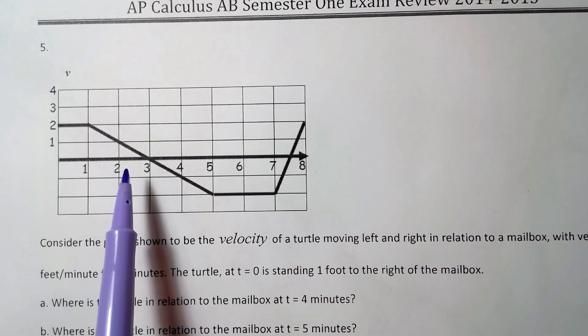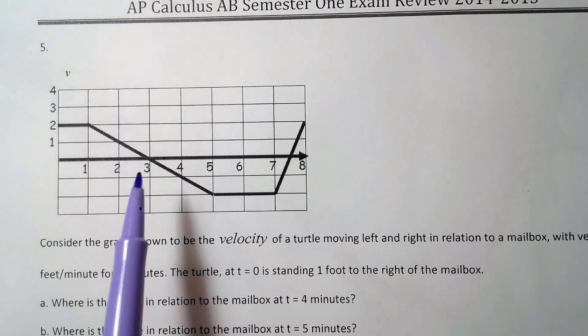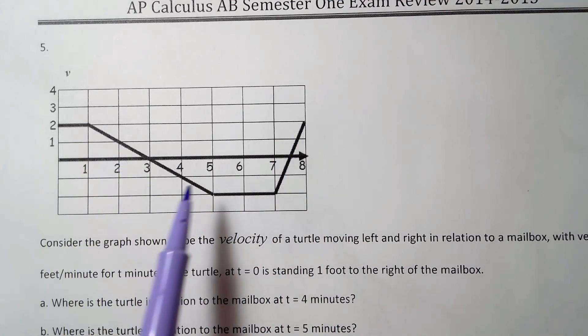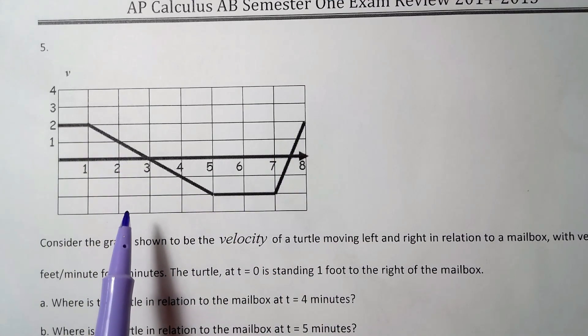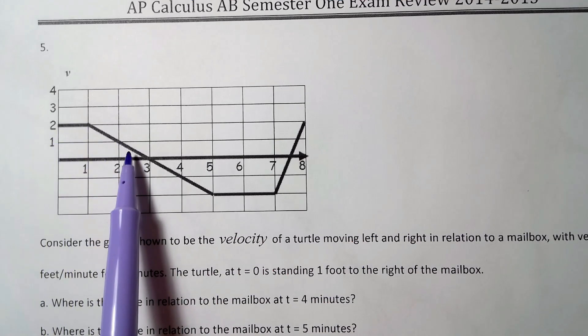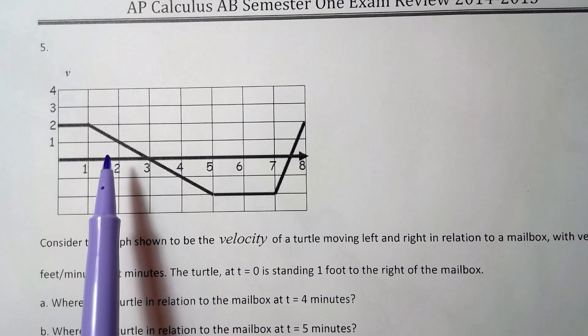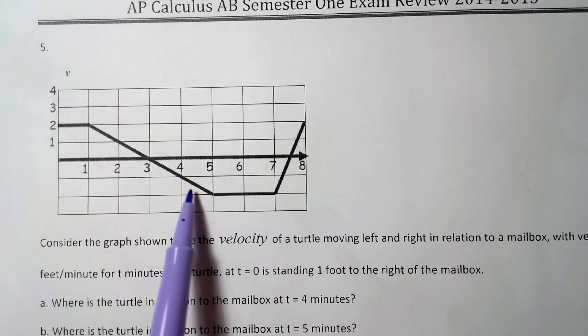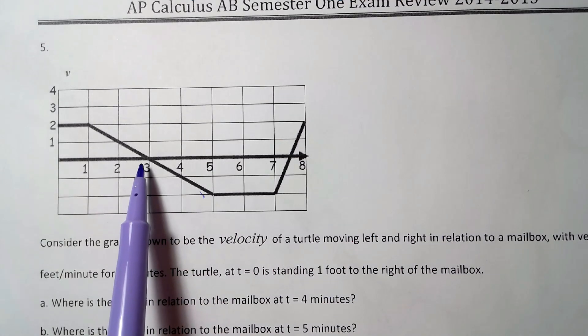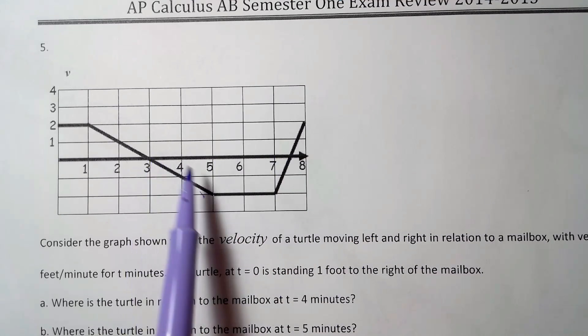So anyway this is a graph of velocity and it's a turtle's moving to the left and to the right. Something to remember: when velocity is positive, the object always moves to the right, and when velocity is negative or below the x-axis, it means that the object has moved to the left. And it's going to change direction at the zeros of the velocity graph.